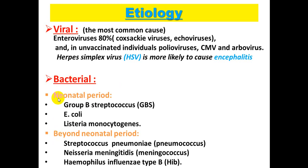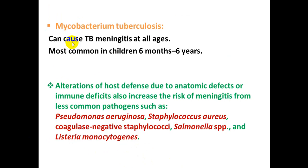The type of bacteria causing meningitis depends on the age group. In the neonatal period, the most common bacteria are Group B Streptococci, Escherichia coli, and Listeria monocytogenes. Beyond the neonatal period, the most common are Streptococcus pneumoniae, Neisseria meningitidis, and Haemophilus influenzae type B. Mycobacterium tuberculosis can cause TB meningitis in all age groups, especially between 6 months and 6 years. Immunocompromised hosts are at risk from Pseudomonas aeruginosa, Staphylococcus aureus, coagulase-negative Staphylococci, Salmonella species, and Listeria monocytogenes.